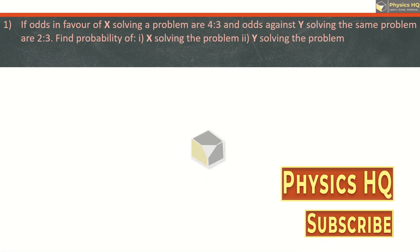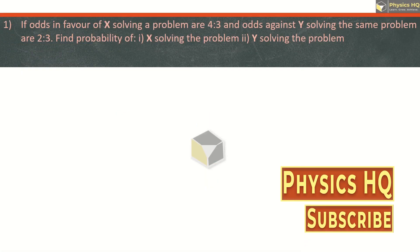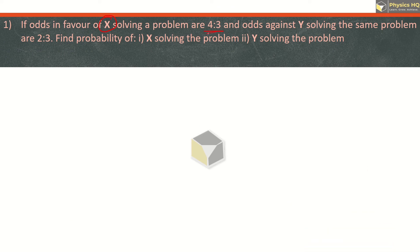If odds in favor of x solving a problem are 4 is to 3, and odds against y solving the same problem are 2 is to 3, find the probability of x solving the problem and y solving the problem.